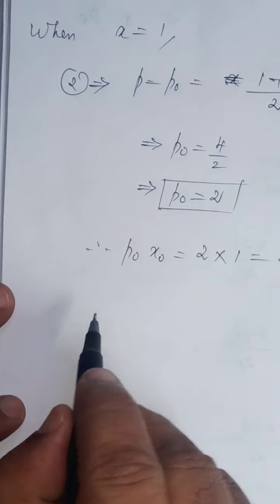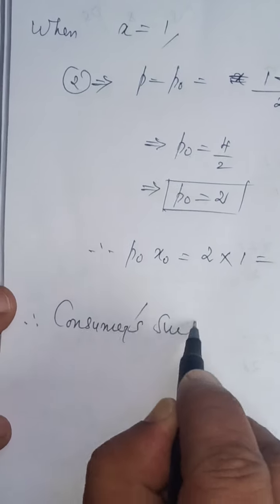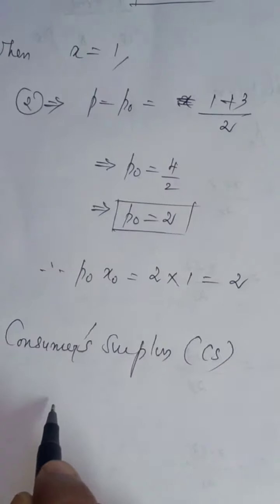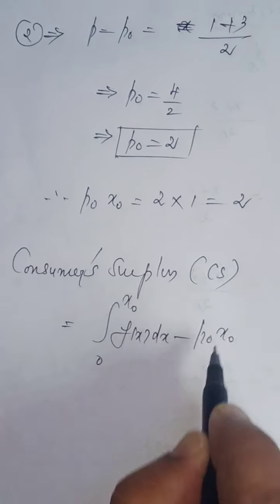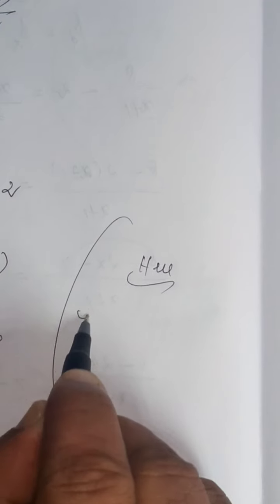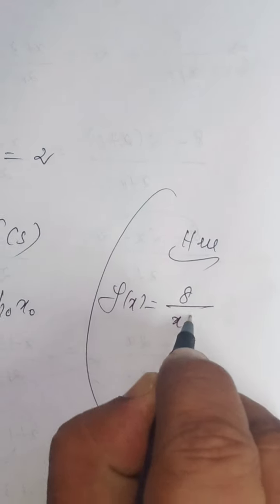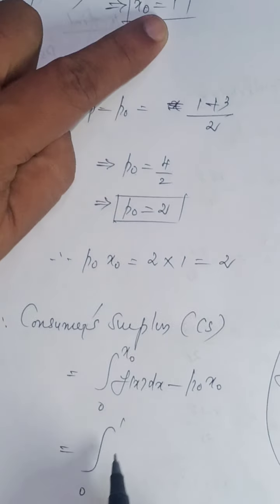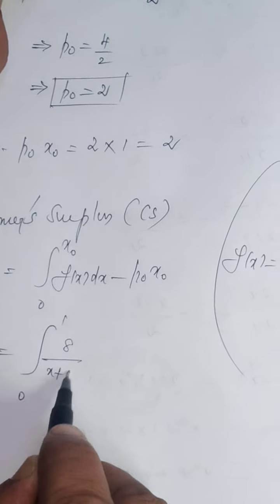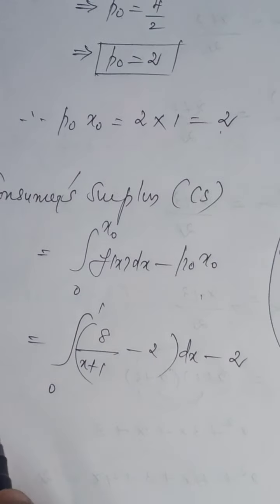We are asked to find both consumer surplus and producer surplus. First, we find consumer surplus CS. The formula is: CS equals integral from 0 to x₀ of f(x) dx minus p₀ times x₀. Here f(x) is the demand function, which is 8 divided by (x plus 1) minus 2. So CS equals integral from 0 to 1 of [8/(x+1) minus 2] dx minus p₀x₀, where p₀x₀ equals 2 times 1 equals 2.